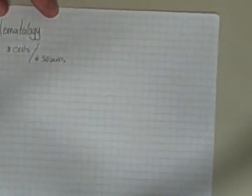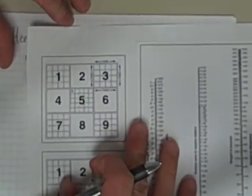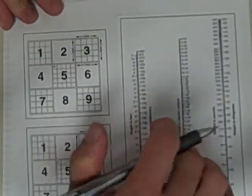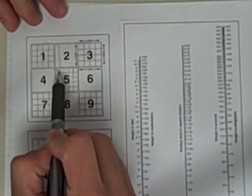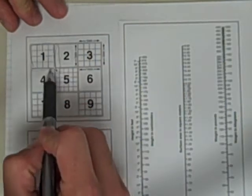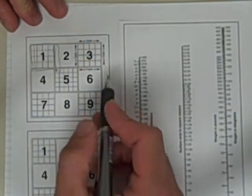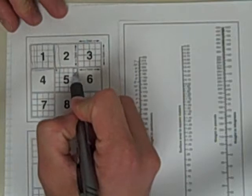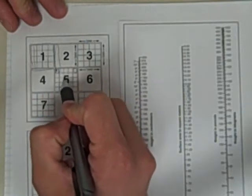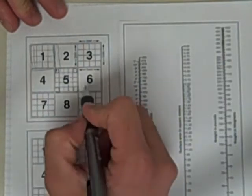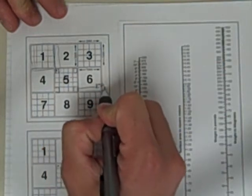So the squares that we're talking about, if we were to look at a hemocytometer, are either these bigger squares, which we refer to as a white blood cell square, or if you can see these smaller squares in the middle that we refer to as a red blood cell square.